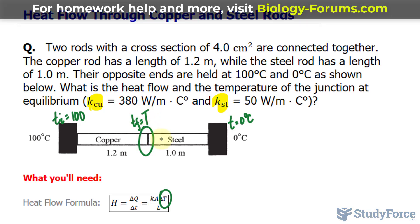So what I will do is calculate the heat flow for the copper and the heat flow for the steel, and make them both equal to each other because it is at equilibrium. The heat flow is going to be the same throughout the entire rod length. Here's what I mean.